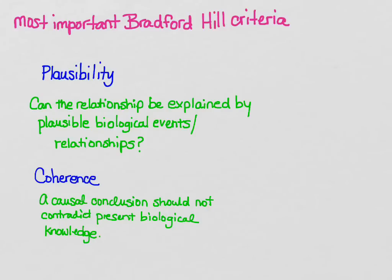The next causal criteria are two related ones: plausibility and coherence. Plausibility means the relationship between the exposure and disease can be explained by plausible biological events or relationships. Coherence is similar — the causal conclusion shouldn't contradict existing biological knowledge. Sometimes there are scientific revolutions, so consistency with prior knowledge isn't a guarantee of a causal relationship, but it does provide better evidence than a relationship that doesn't make sense given current biological knowledge.